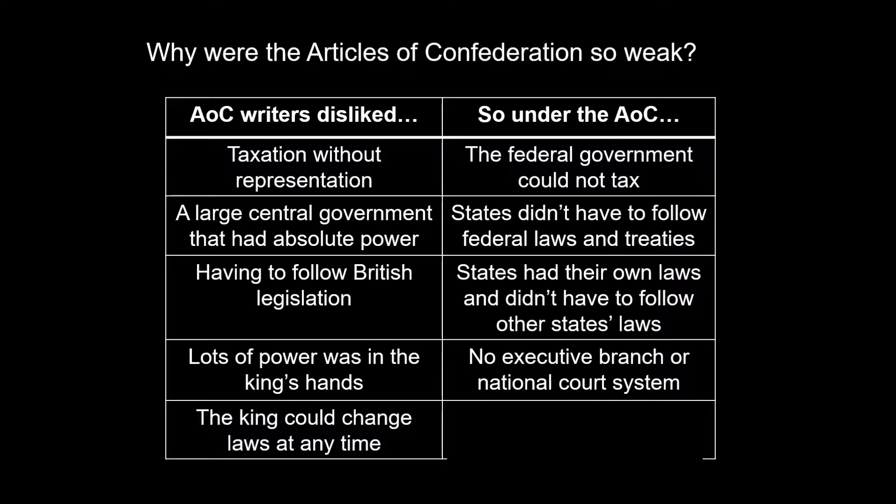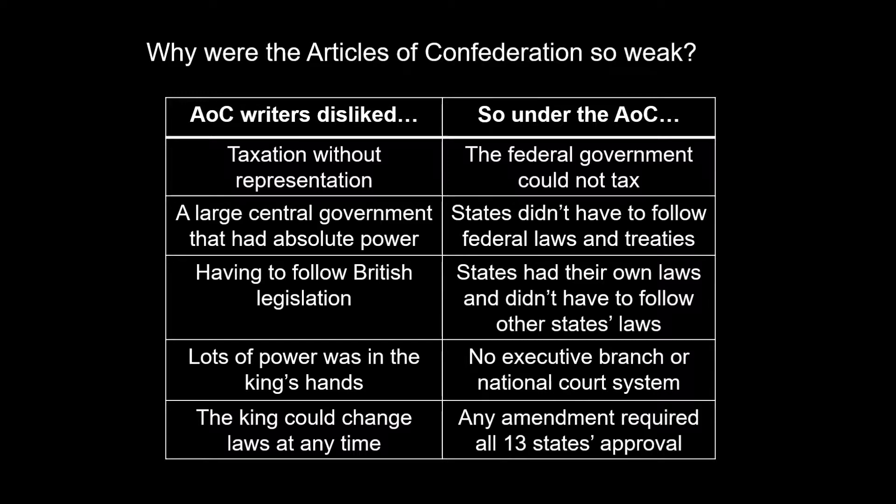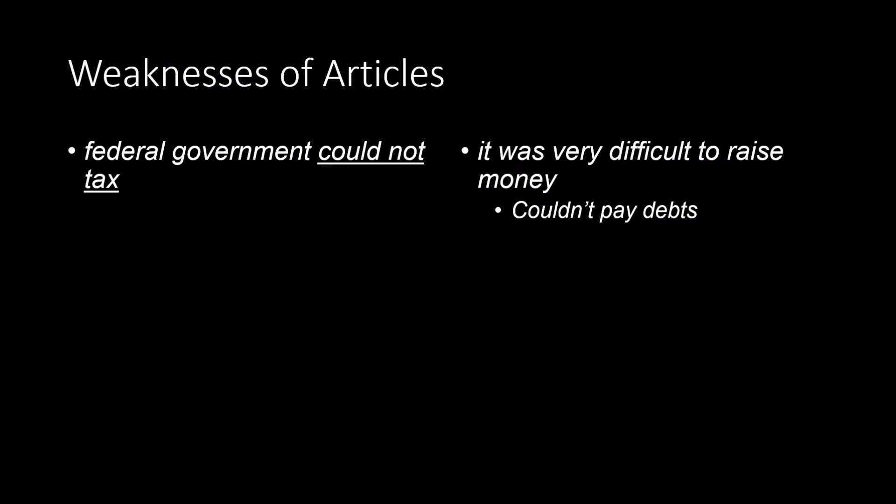They did not like the fact that the king could change laws at any time, so any amendment to the Articles of Confederation required all 13 states to agree — very hard, near impossible. Another weakness: the federal government could not tax, so it was really difficult to raise money. They owed a lot of money to individual people and foreign countries who they borrowed from during the Revolutionary War. They couldn't raise taxes, so they would essentially say, 'Massachusetts, you owe this much; Georgia, you owe this much — please pay up,' but there was no power to force anyone.